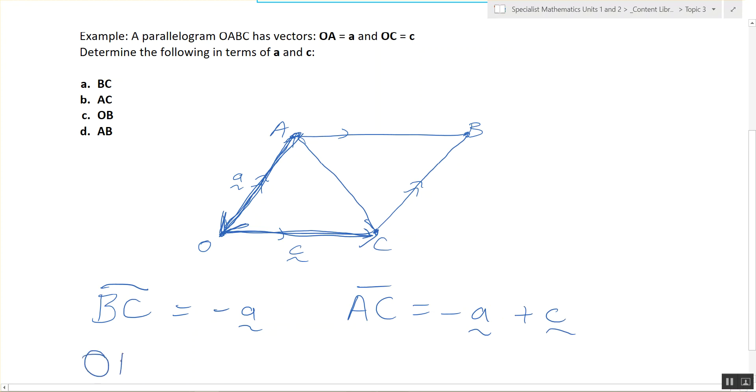OB. C plus A. I'm figuring it out. C plus A. Last one, AB. Cal, just C. Very good.